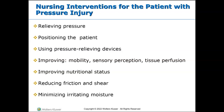Nursing interventions to reduce risk of pressure injuries include repositioning patients at least every two hours. Position the patient with pillows and pressure-relieving devices like heel troughs, specialty mattresses, splints, and pillows — whatever is needed to relieve pressure. Increase patient mobility, getting them up and moving every hour, which is also good for blood flow and prevents deep vein thrombosis that could turn into a pulmonary embolism.